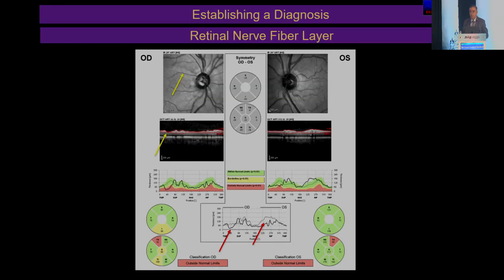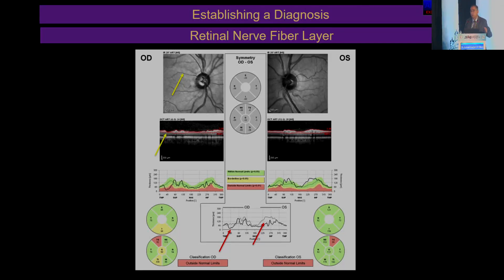So let's look at establishing a diagnosis. The commonest place where people want to look is what I call kindergarten level OCT — is it red, is it green, is it yellow? We can rise above that. We need to look at the least colorful part of OCT, which is right here: the asymmetry between the two eyes, and that is going to tell us where the problem is.